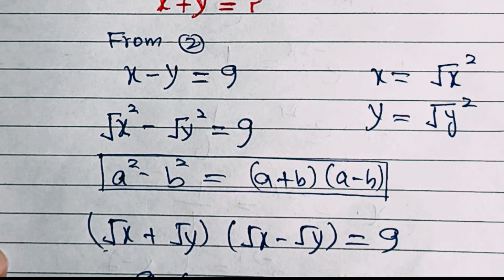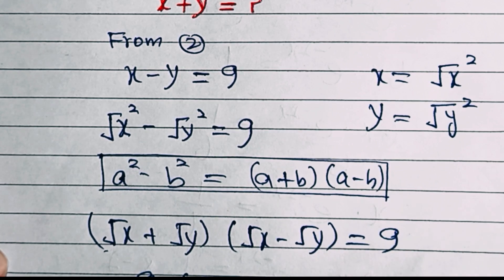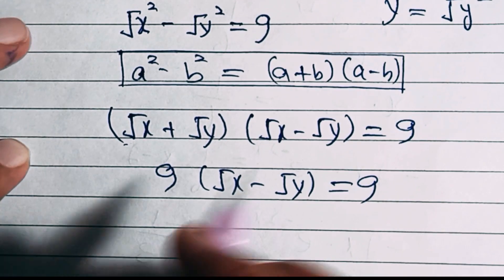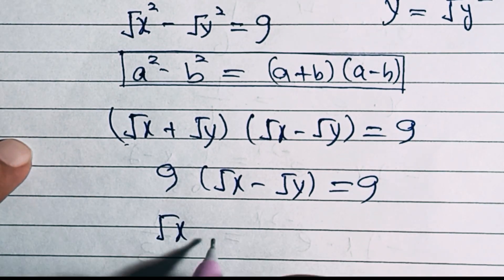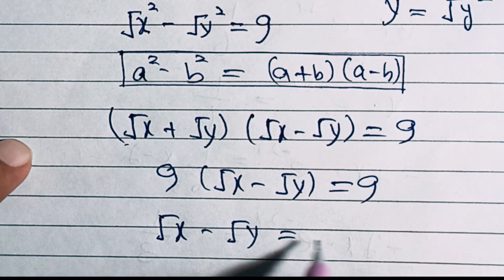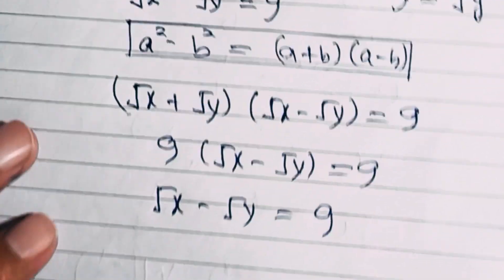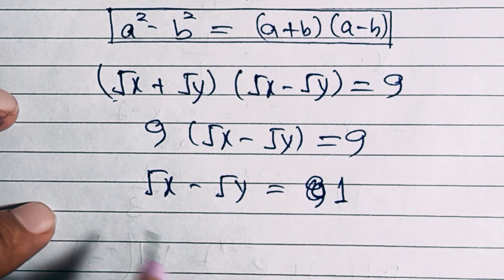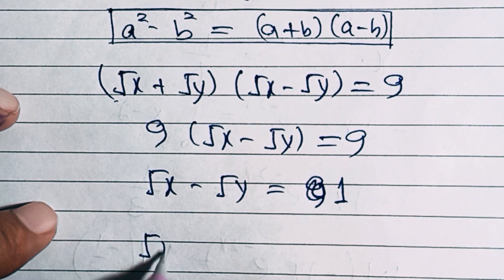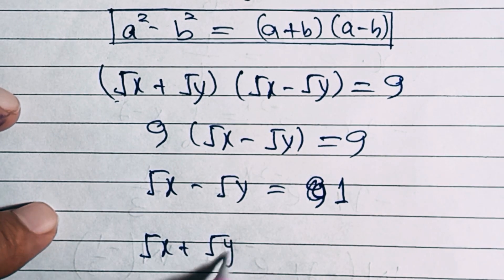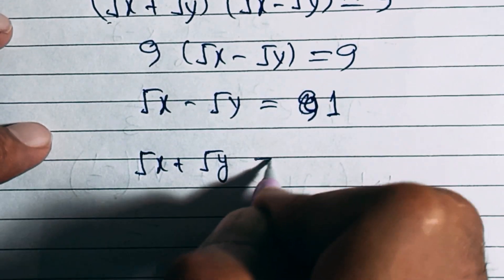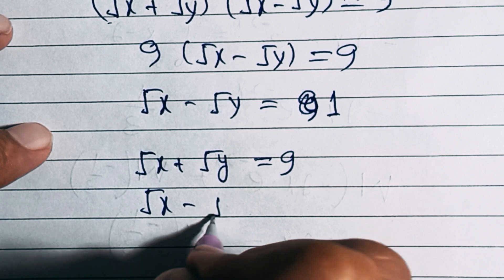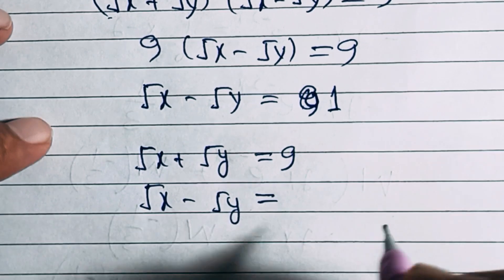We get 9 × (√x - √y) = 9. Dividing both sides by 9, we have √x - √y = 1. So from equation one we have √x + √y = 9, and from this equation we have √x - √y = 1.